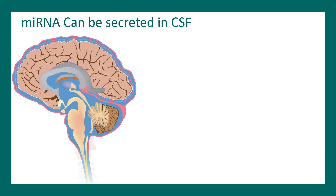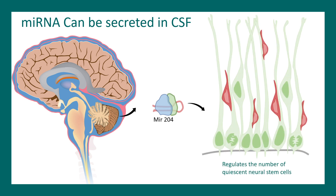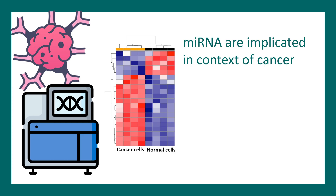Micro-RNAs are not only present inside cells but also in secreted body fluids. For example, micro-RNAs can be found in cerebrospinal fluid. One example is micro-RNA 204, which has been shown to regulate the quiescence of stem cells in the brain region — regulating the number of quiescent neuronal stem cells — which is super important for brain development.